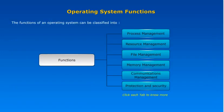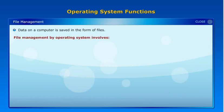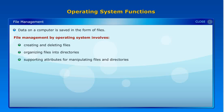File Management: Data on a computer is saved in the form of files. File management by the operating system involves creating and deleting files, organizing files into directories, supporting attributes for manipulating files and directories, mapping files onto secondary storage, and backing up files on stable storage media.